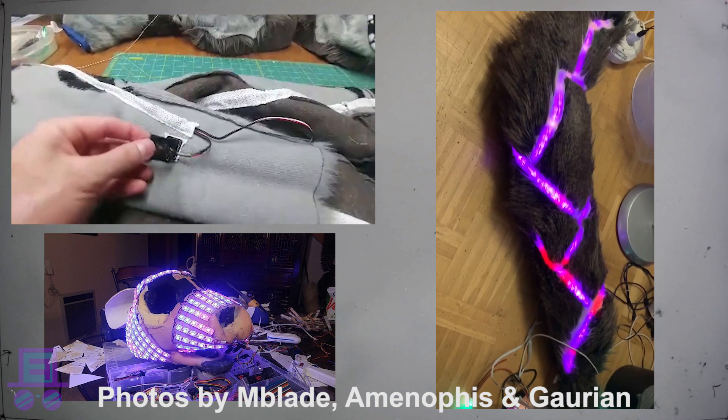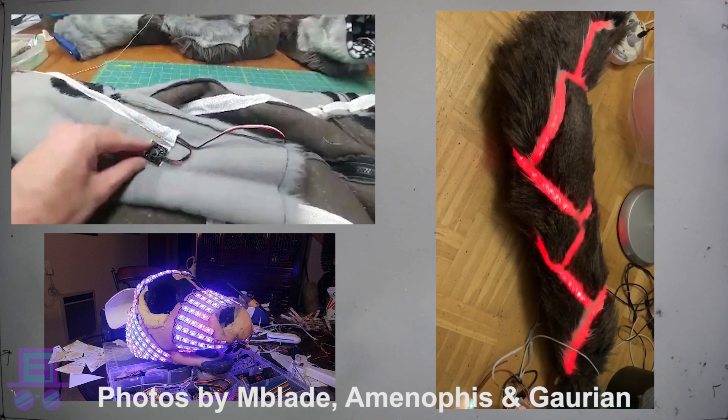Now these LEDs are ready to be mounted. To do this, we can put them in sewn pockets on the back of the fur or glue them to the fursuit base before furring.